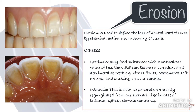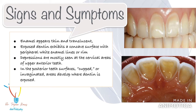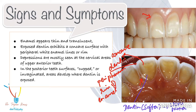The intrinsic causes of erosion are acid generated internally, primarily regurgitated from the stomach, as in bulimia, GERD, or chronic vomiting. This is what dental erosion looks like: the enamel appears thin and translucent. Enamel is lost on the posterior occlusal or anterior palatal or labial surfaces, and the exposed dentine exhibits a concave surface with a peripheral white enamel rim. Depressions are mostly seen at the cervical areas of upper anterior teeth. One very important thing: the dentine under enamel is about 10 times easier to dissolve, so once the outer enamel layer is finally lost, the wear dramatically increases as the exposed dentine wears off at a much faster rate.